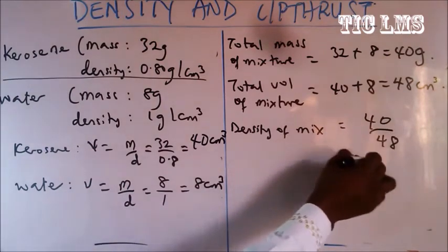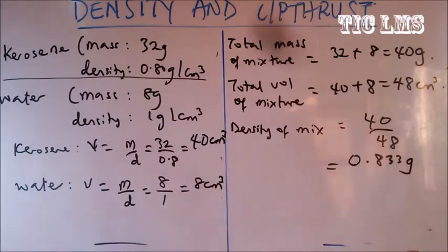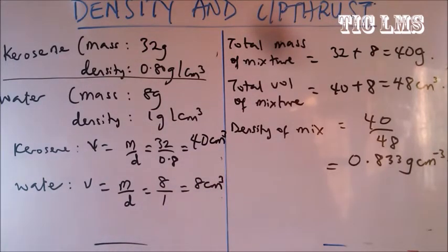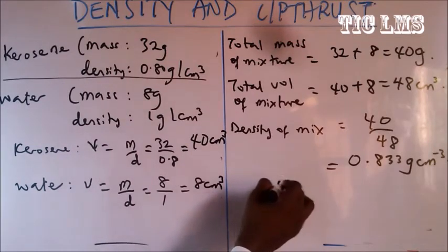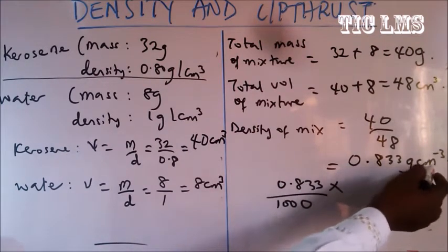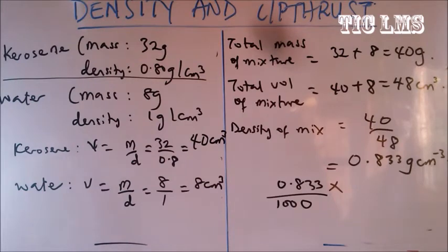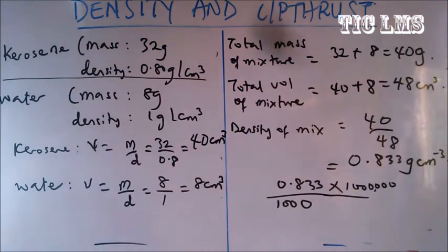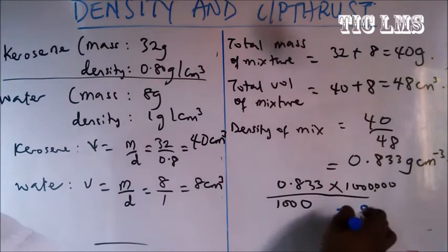Hence density of mixture equals total mass over total volume, which is 40 over 48, giving 0.833 g/cm cubed. To convert to SI units: divide by 1000 for grams to kilograms, then multiply by 1 million for cm cubed to meter cubed, giving a final answer of 833 kilogram per meter cubed.